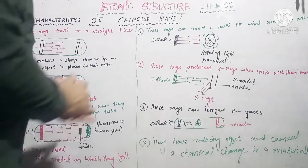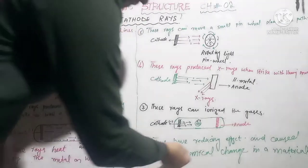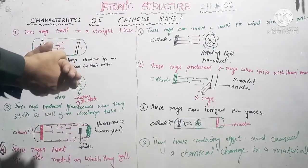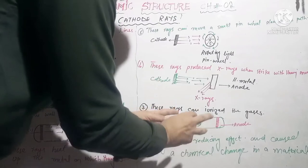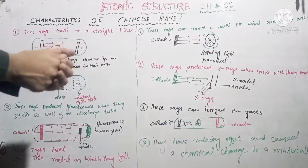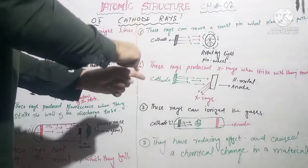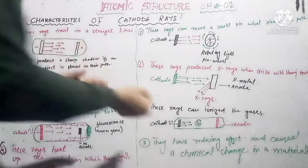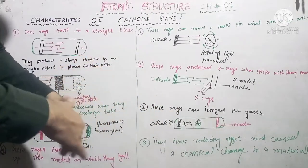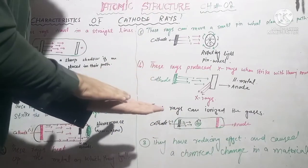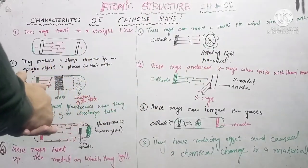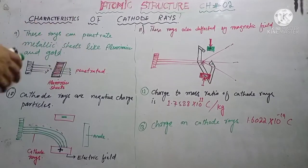Characteristic number 8: cathode rays have reducing effects. They can cause a chemical change in material because they carry electrons, resulting in a reducing chemical change.